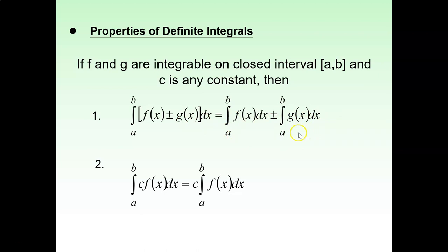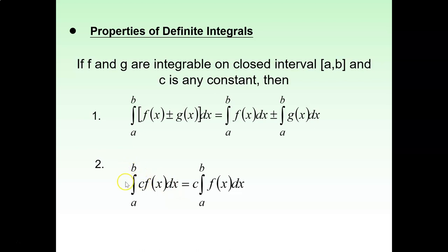The definite integral means there will be a value for the integration. Previously, we only learned how to integrate using techniques of integration. But now you're going to substitute values a and b into x so that you can get a value. For the second property: integration of a constant times f(x) dx — you can put the constant c outside, so it becomes c times the integration of f(x) dx from a to b.